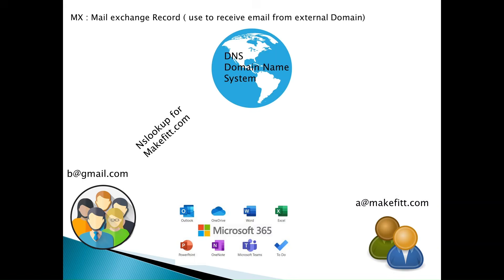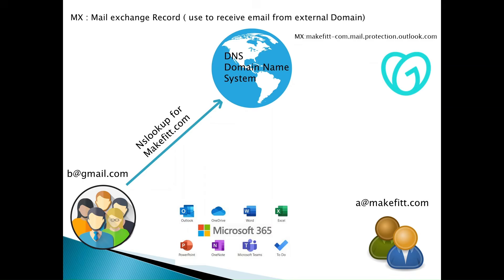For example, if an external user tries to send an email to an organization user, first an nslookup will happen for the DNS record. The external provider does an nslookup to find the domain — makefit.com — then DNS queries the domain provider, which checks for the MX record value: makefit-com.mail.protection.outlook.com. Once verified by the domain provider, it redirects to the M365 environment, which then delivers the mail to the user mailbox, for example user@makefit.com. That is how MX record works.